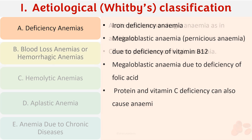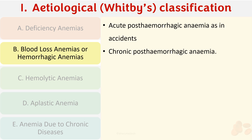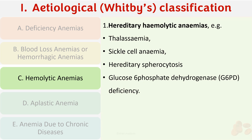Next is blood loss anemia or hemorrhagic anemia. This can be acute post-hemorrhagic anemia, as in cases of accidents, or chronic post-hemorrhagic anemia, as in cases of carcinoma of the stomach or carcinoma of the colon, which causes chronic hemorrhage.